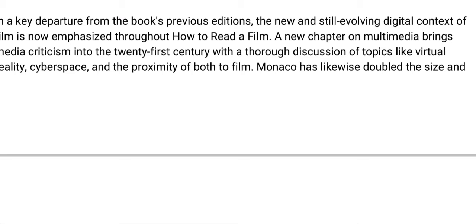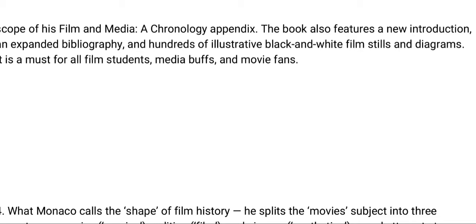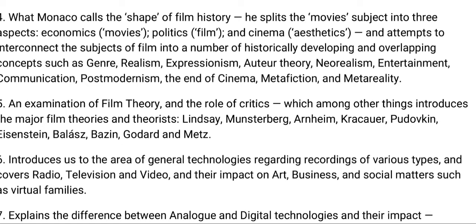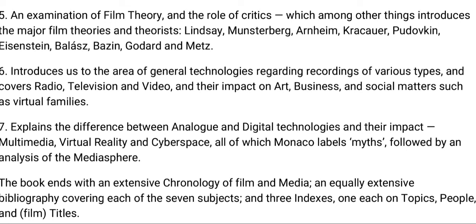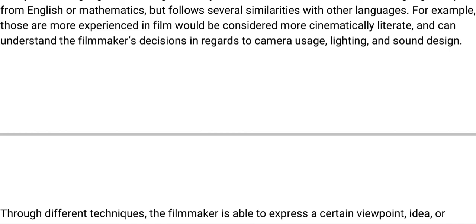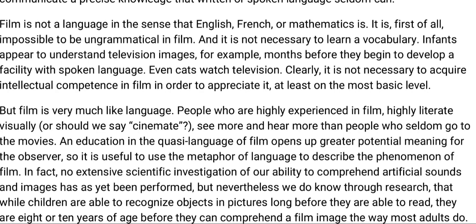Monaco has also doubled the size and scope of his film and media chronology appendix. The book features a new introduction, expanded bibliography, and hundreds of illustrative black-and-white film stills and diagrams. What Monaco calls the 'shape of film history' fills the movie subject into three aspects: economics, politics, and film cinema as types. It interconnects concepts such as genre, realism, expressionism, auteur theory, neorealism, entertainment, communication, postmodernism, and the end of cinema. The book also examines film theory and introduces major film theorists. More details are shown on screen here, so you can pause the video and read.